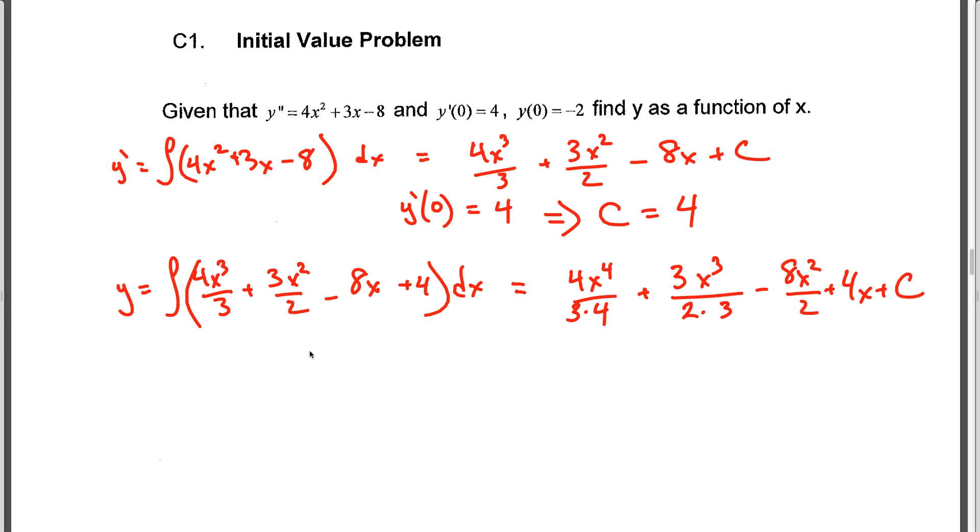And again, we're going to use our initial information, y(0) = -2, noting again that each of these is going to be multiplied by x, meaning that the C, in this case we'll call this C2 so it's separate, is going to equal negative 2 when we put in 0 for each of the x's.